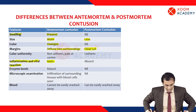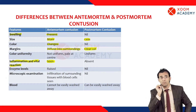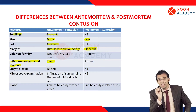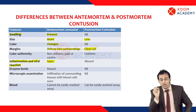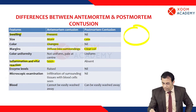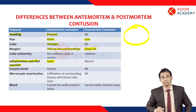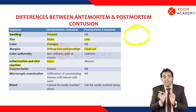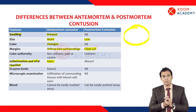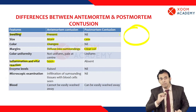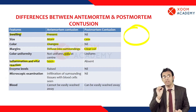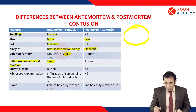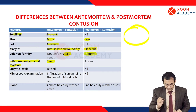Regarding uniformity of color: since color changes occur from day 1 to day 14, in a living person — that is, in ante-mortem contusion — color will not be completely uniform. It will be pale at the center and yellow at the edges. In post-mortem, the color will be completely uniform from beginning to end.